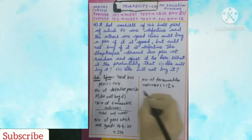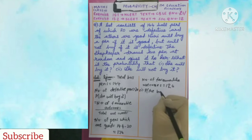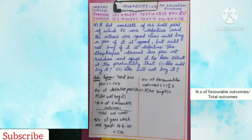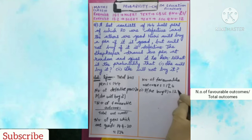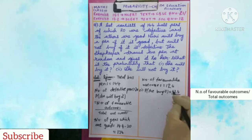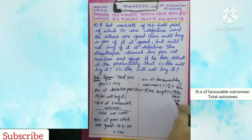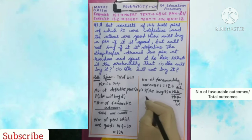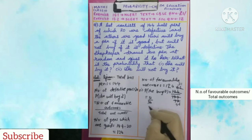Probability that she will buy it equals number of favourable outcomes by total outcomes, that is 124 by 144. Dividing both by 2: 124 divided by 2 is 62, 144 divided by 2 is 72; dividing again by 2 gives 31 by 36. So the probability that Noori buys a pen is 31 by 36.